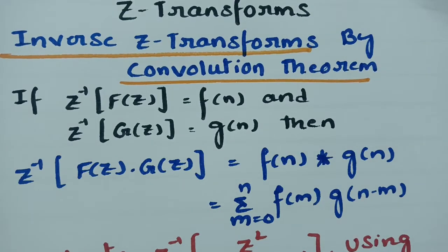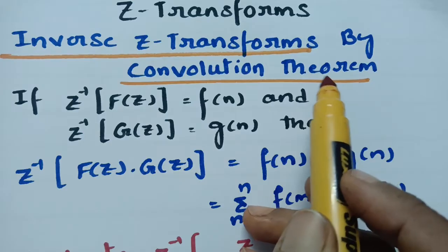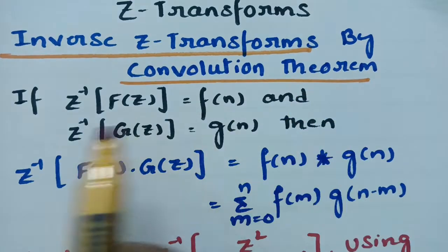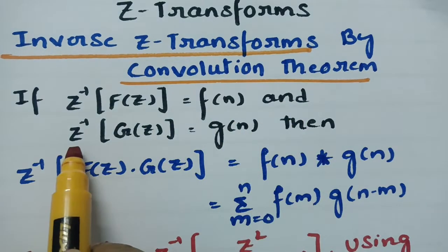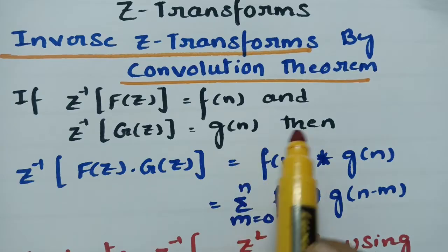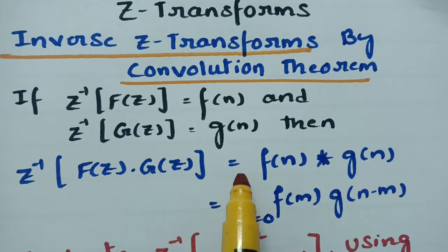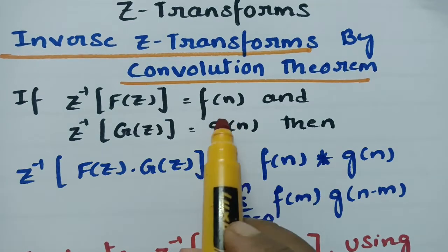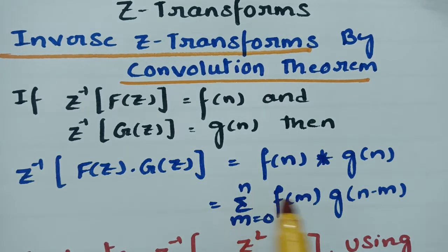Today's video we are going to discuss how to find the inverse Z-transform using the convolution theorem. According to the convolution theorem, if Z-inverse of F(z) equals f(n) and Z-inverse of G(z) equals g(n), then Z-inverse of F(z)·G(z) equals f(n) * g(n), which can be written as sigma from m=0 to n of f(m)·g(n−m).